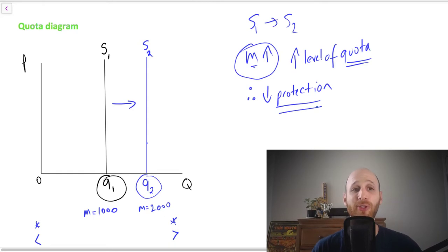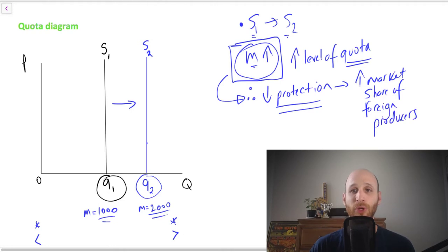Now I know this can be confusing a little bit, so let me go back over this. We've moved from S1 to S2. And remember that this is looking at the level of imports. So what's happened is that we have increased the level of imports in the economy by increasing the level of the quota. Before we only let in a thousand, now we're letting in 2000. So by letting in more imports, we're actually reducing protection because we are increasing the market share of foreign producers.